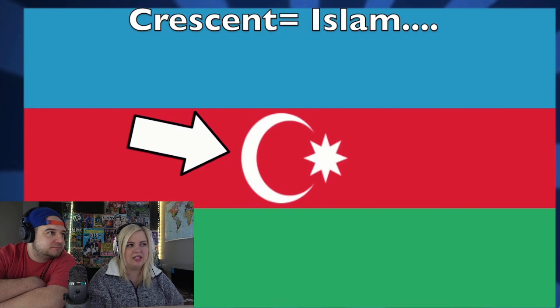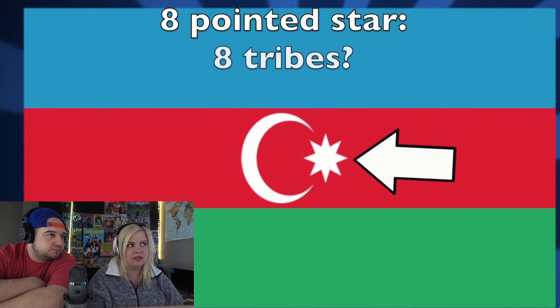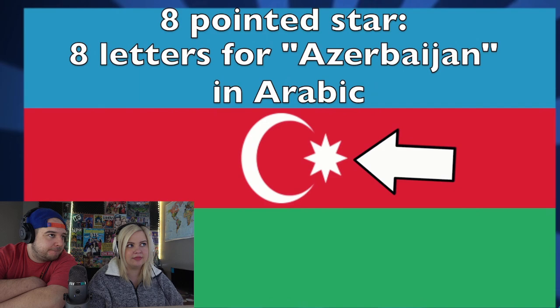The crescent you would think means Islam, and it does — however, the Azerbaijanis and Turks will tell you that the symbol originated from the Turkic people, not the Arabs. The eight-pointed star — some say it represents eight tribes, but it actually represents the eight letters of the word 'Azerbaijan' written in Arabic, even though Azerbaijan has since adopted a Latin-based alphabet.